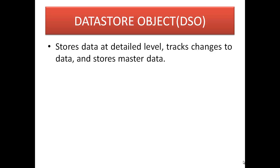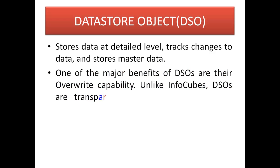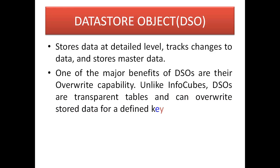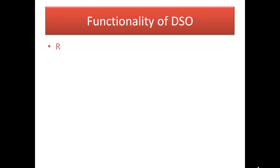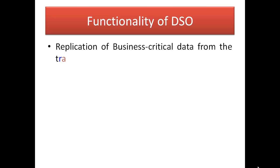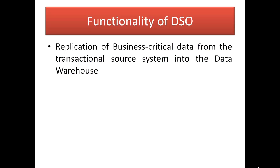A data store object stores data at the detail level, tracks changes to data, and stores master data as well. One of the major benefits of a DSO is its override capability, unlike InfoCubes. DSOs are transparent tables and can override the stored data for a defined key. The core functionality of a DSO is replication of business-critical data from transactional source systems into the data warehouse.